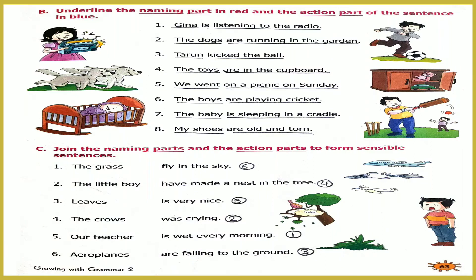Exercise B. Underline the naming part in red and the action part of the sentence in blue. Number 1: 'Gina is listening to the radio.' 'Gina' is the naming part; 'is listening to the radio' is the action part. Number 2: 'The dogs are running in the garden.' 'The dogs' is the naming part; 'are running in the garden' is the action part. Number 3: 'Tarun kicked the ball.' 'Tarun' is the naming part; 'kicked the ball' is the action part. Number 4: 'The toys are in the cupboard.' 'The toys' is the naming part; 'are in the cupboard' is the action part.